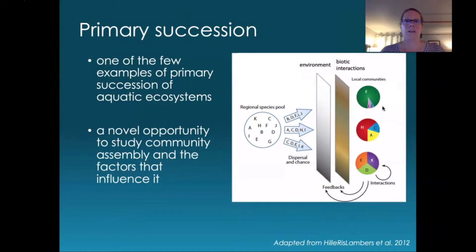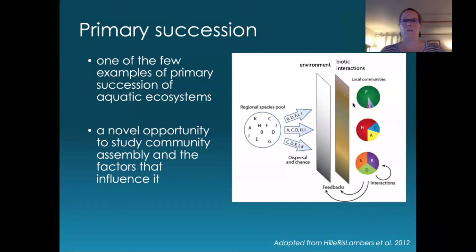The overarching question we're asking is: how does primary succession proceed in aquatic environments? This is a question that's been studied in terrestrial systems for decades, if not centuries, but there are very few good examples in aquatic environments. Does it proceed in the same way that terrestrial succession does? Can we study community assembly and try to understand the factors that influence it through time? The Mount St. Helens system is perfect for this question because it's essentially a natural experiment with a lot of replication, since all the ponds were created at roughly the same time.